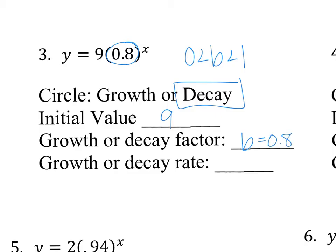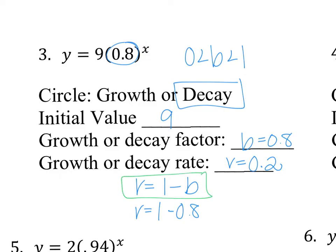We haven't had to work with decay before. My rate is actually 1 minus b. So when I plug that in, I have 1 minus 0.8, which gives me 0.2 as my decay rate. Decay factor and decay rate are two different things. For decay rate, we always use r equals 1 minus b.